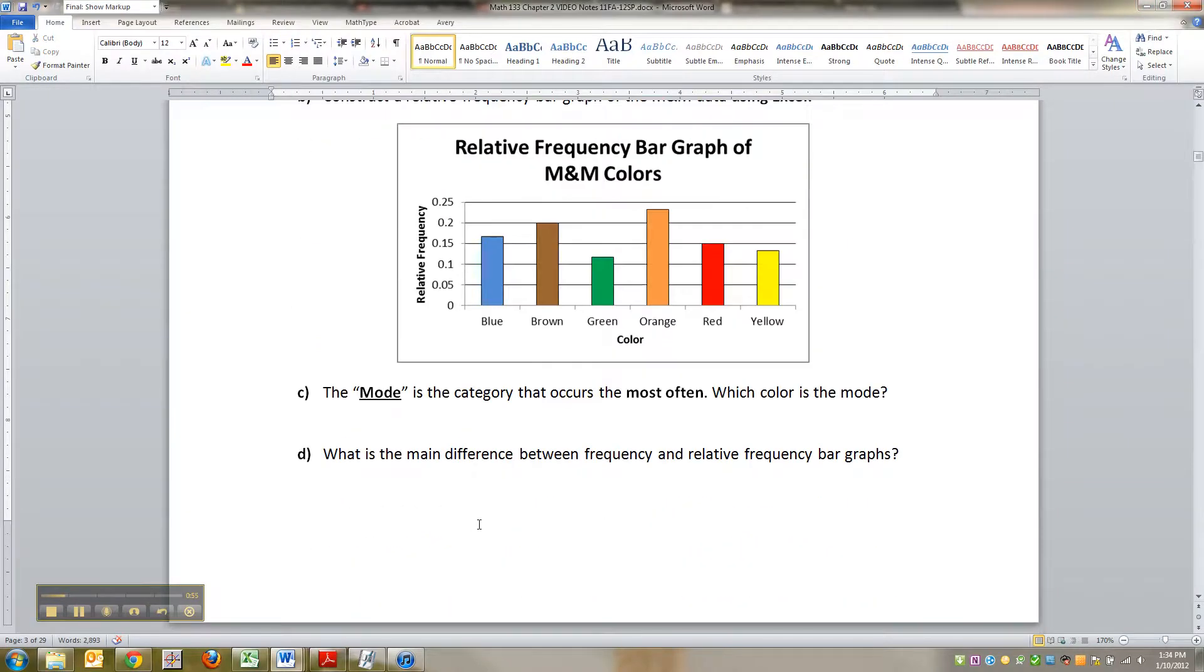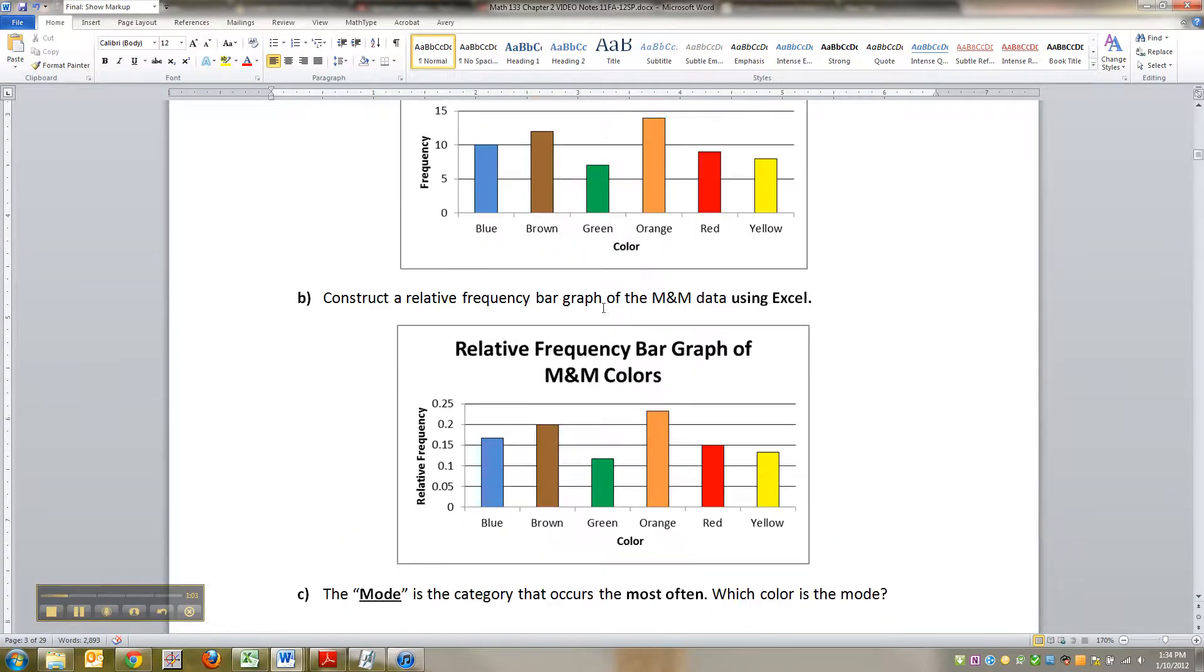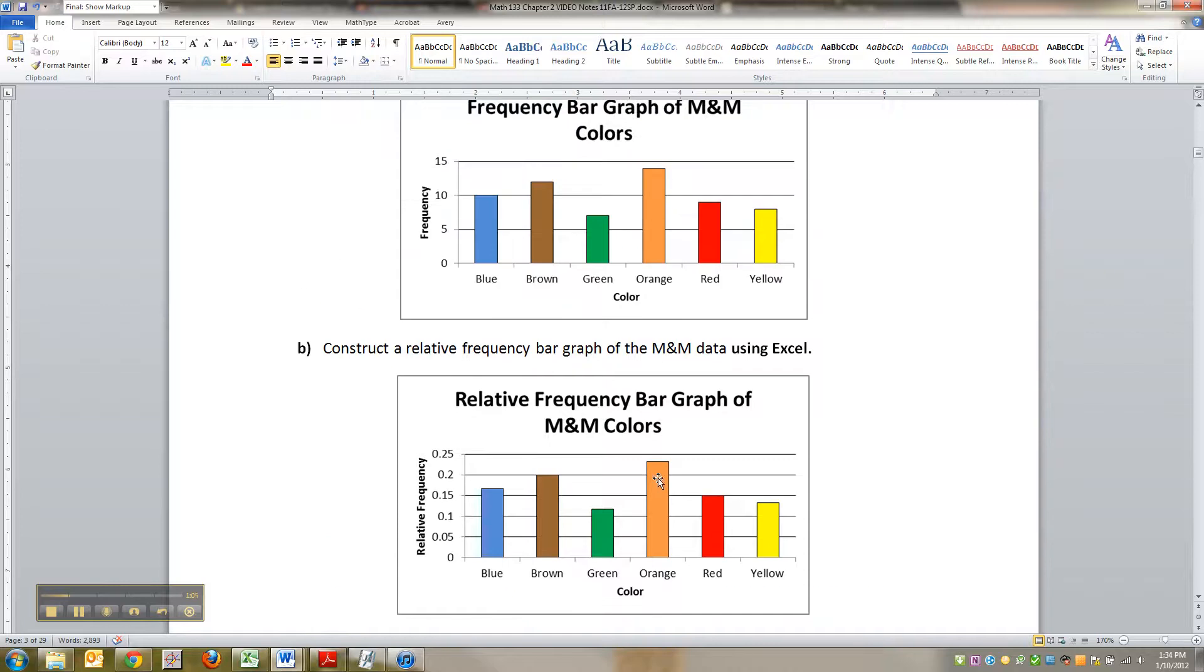Okay, so the mode is whichever category occurred the most frequently. So in this bag of M&Ms, which color was the most frequent color? And you can see it in both of the graphs. It's orange, right?